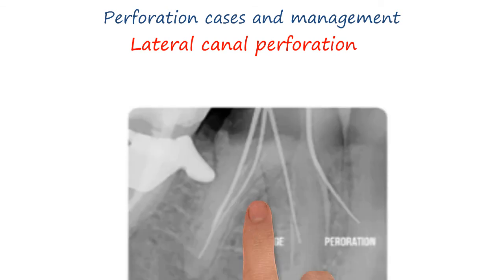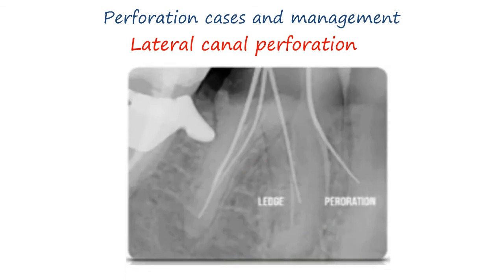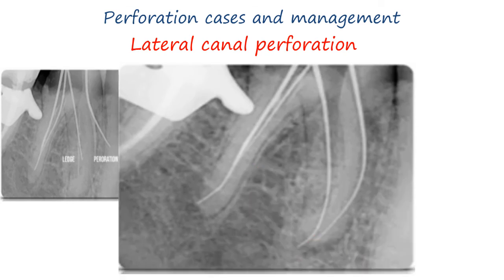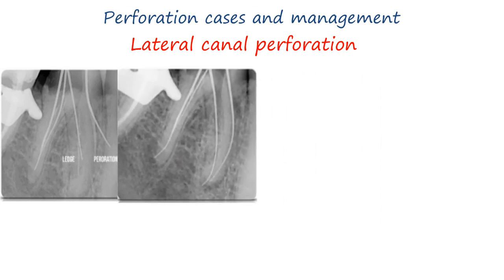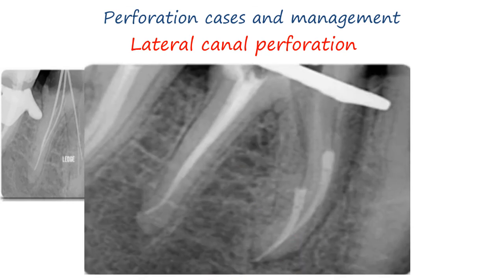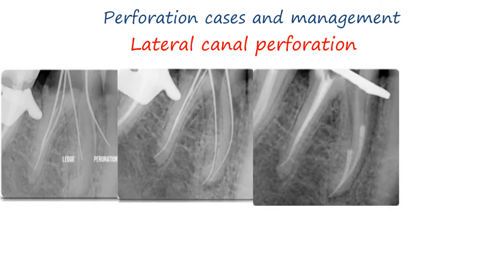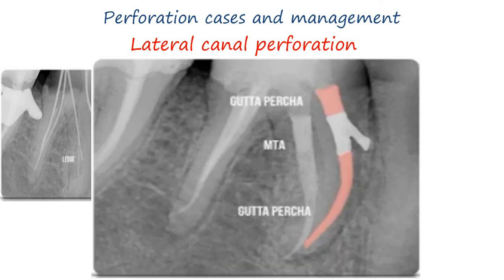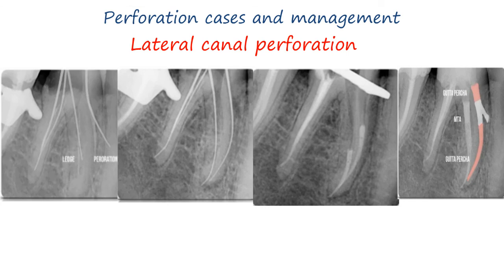This is a lower molar case with lateral root canal perforation. Use ProCurve files to bypass the perforation, to clean and shape the canal beneath it. Then obturate below the perforation level, and apply MTA at the site of perforation — this is called the sandwich technique.